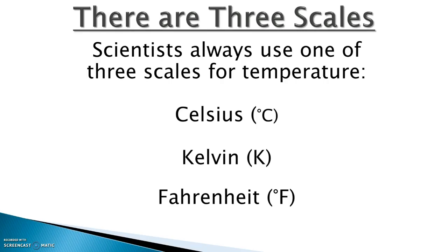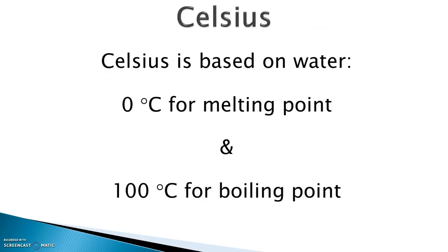Celsius is based on water. They looked at water and said when water melts, we're going to make that zero degrees Celsius. When water boils, we're going to make that 100 degrees Celsius. The difference in between they broke up into 100 parts, and that defined the size of a degree. The size of a degree Celsius is very important and will play a role in the development of the Kelvin scale.